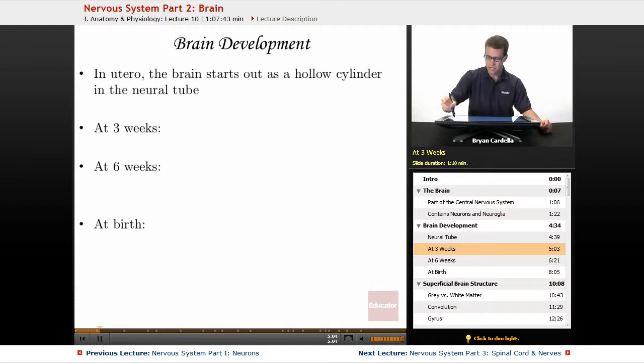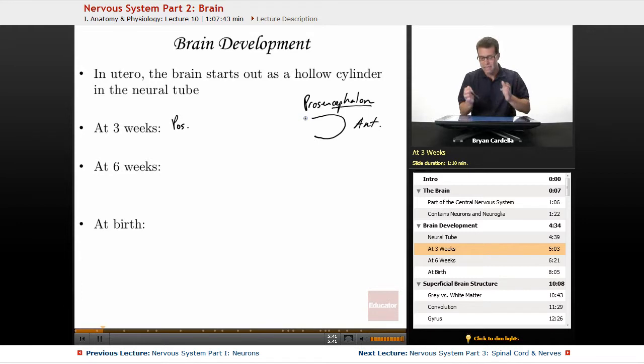So at three weeks, let me actually color code this for you, you would see three main sections. Up here, this is the anterior part towards the front, and back here is going to be the posterior part. Up at the anterior part, you would call this first bump the prosencephalon. And this word cephalon is going to be the suffix, the ending of all of these little areas. So prosen, pro meaning before, like prologue, is up at the front.